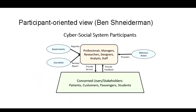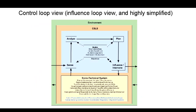I want to give you two graphics to communicate different views of the cyber-social system. This is a chart by Ben Shneiderman. In the green at the bottom, you have the people and delivery systems you're trying to improve — patients, customers, passengers, students. Above you have the people who are essentially monitoring, analyzing, and trying to deliver improvements into that system. To the left, you have regulatory agencies and forms of independent oversight. And of course, these systems are often threatened by malicious actors.